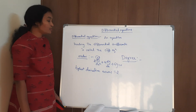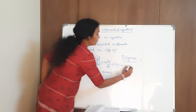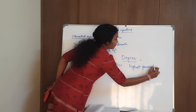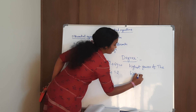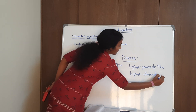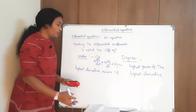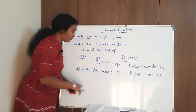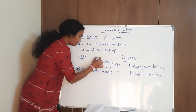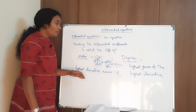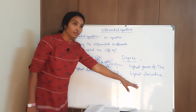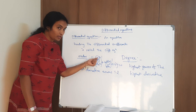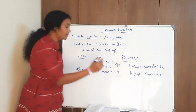Now for the degree — degree means the highest power of the highest derivative. Observe this equation: the first derivative has power 1 and the second derivative also has power 1. We look at the highest power of the highest derivative, which is the second derivative with power 1. Therefore, order is 2 and degree is 1.